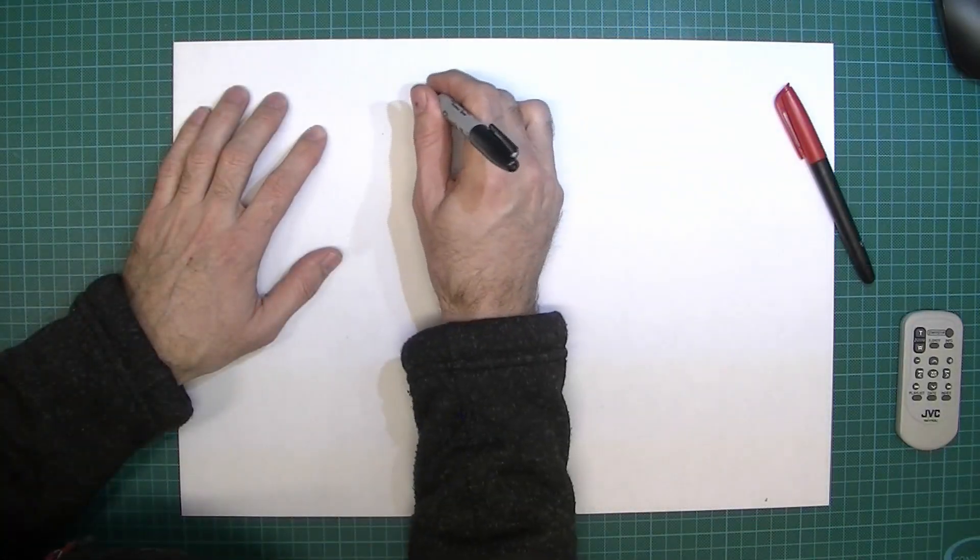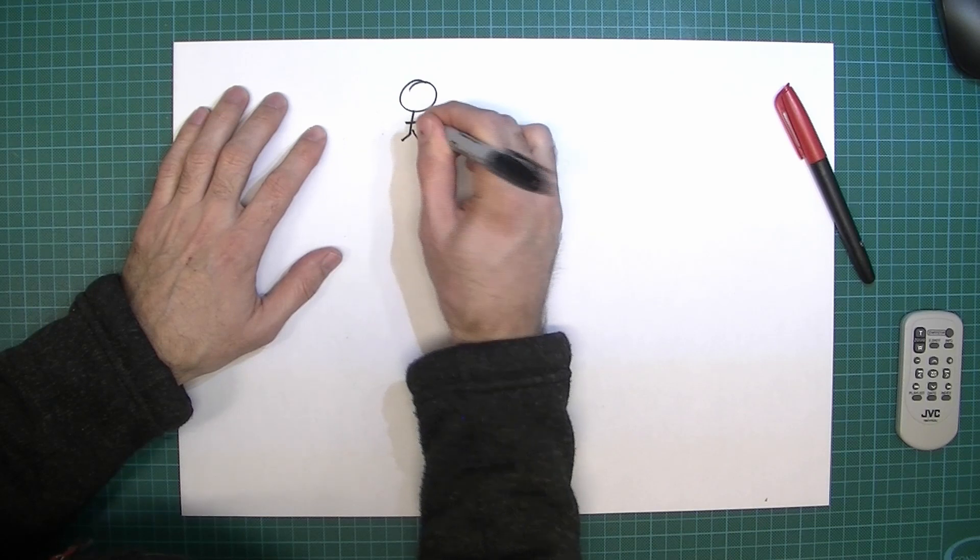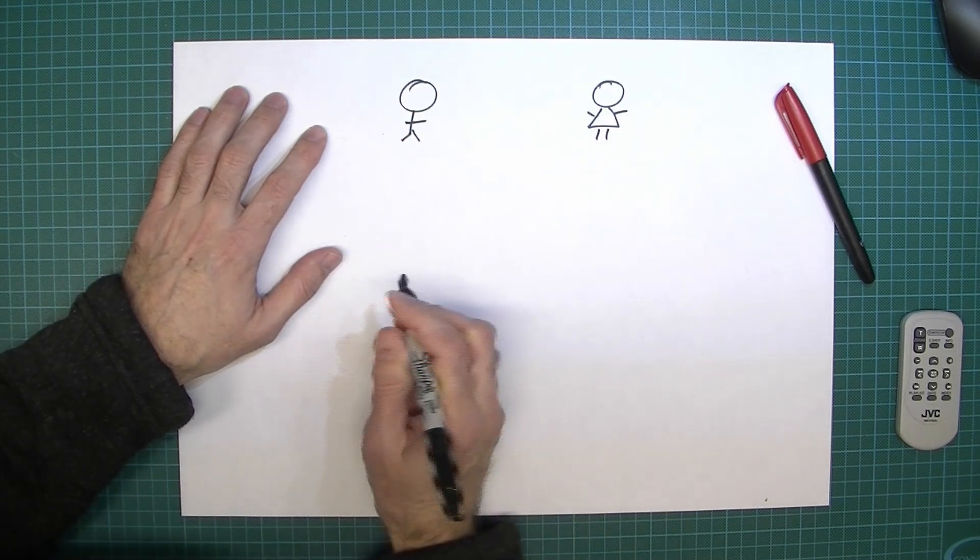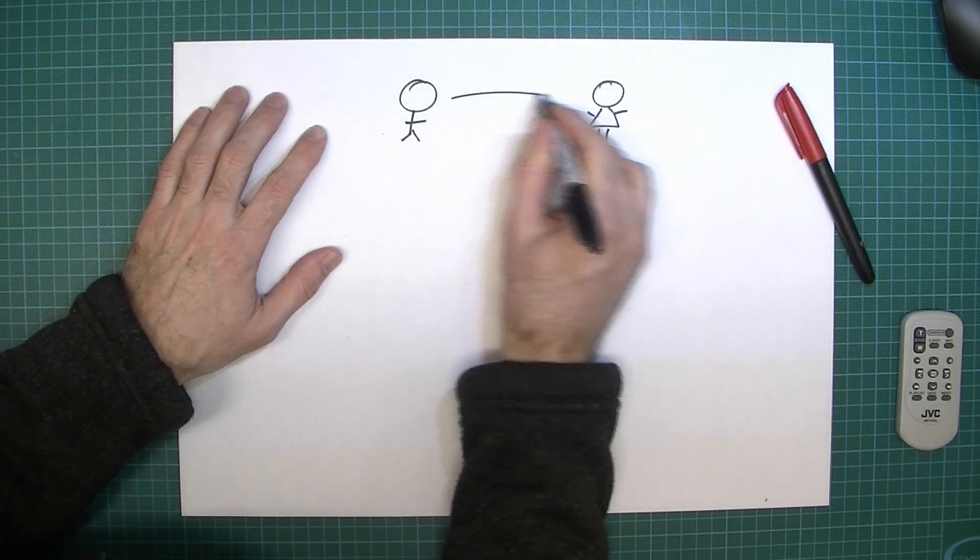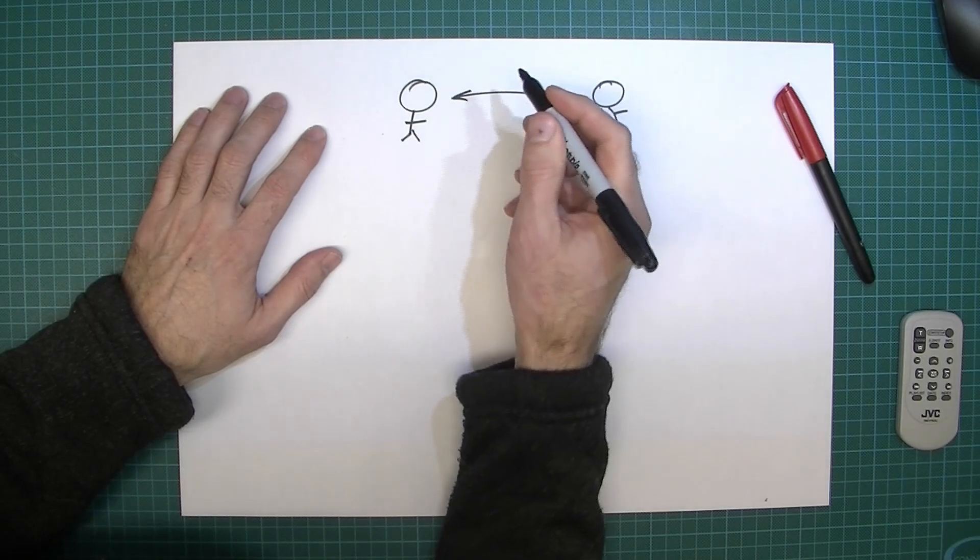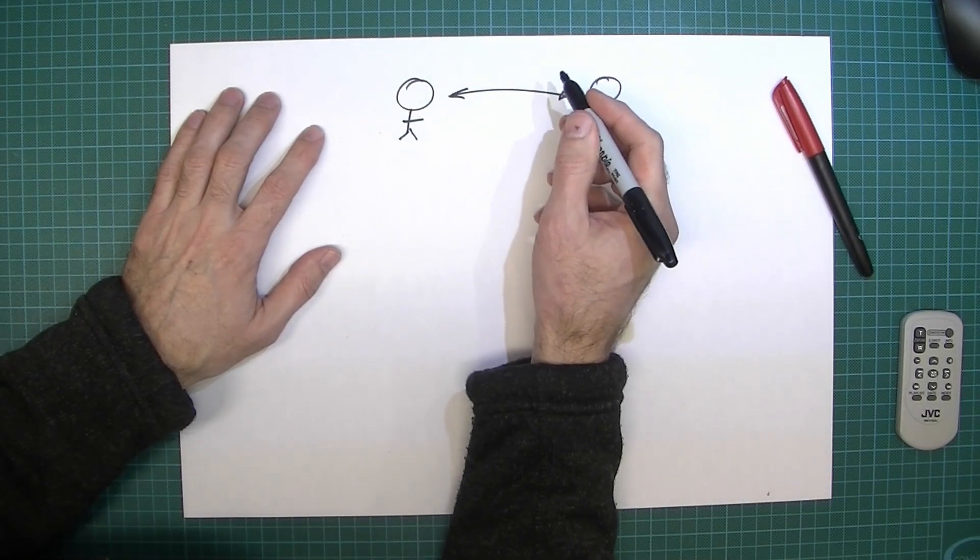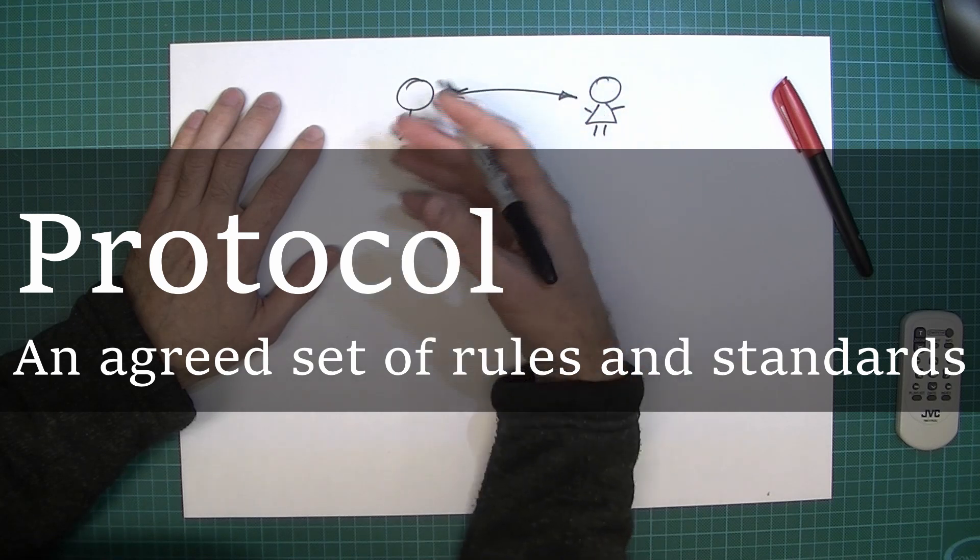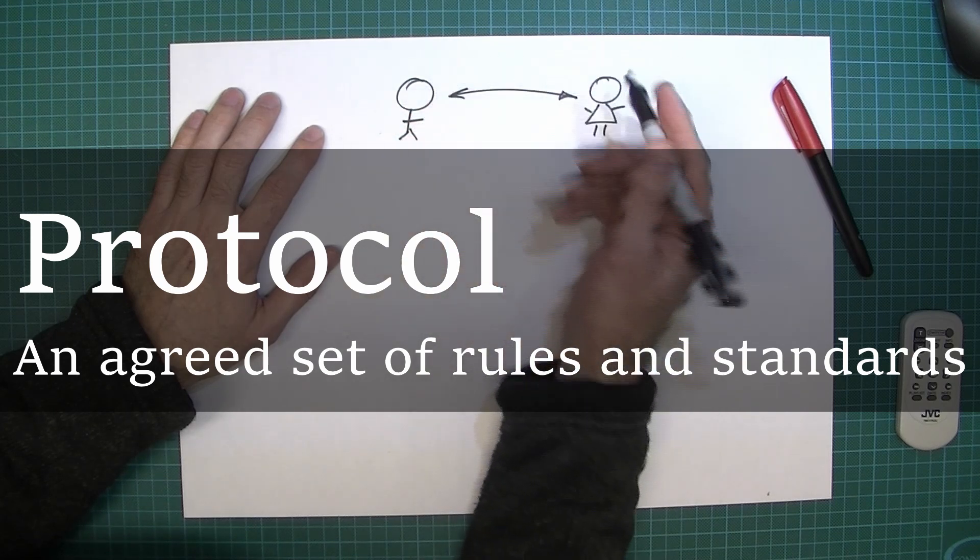So imagine that we had two people who wanted to communicate. They're going to need to have a means of communicating and also they're going to need to have a set of rules for communicating. A set of rules that would come with their language, a protocol for speaking to each other, for being polite.